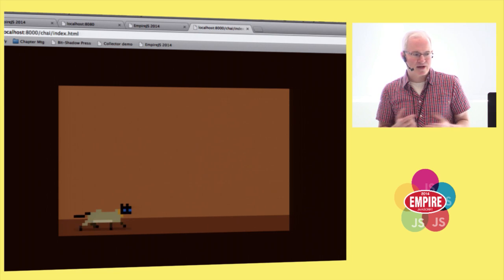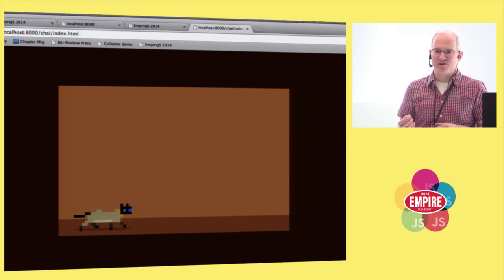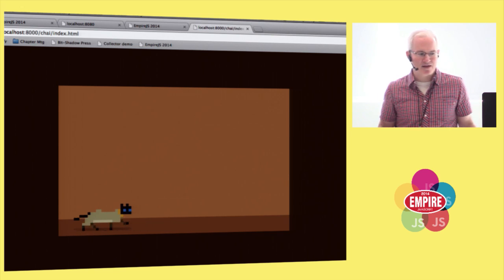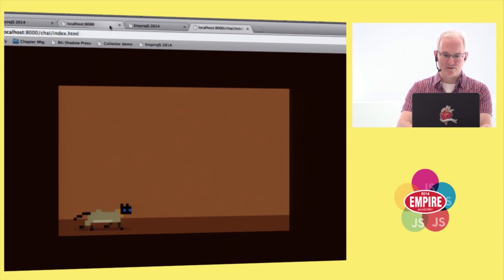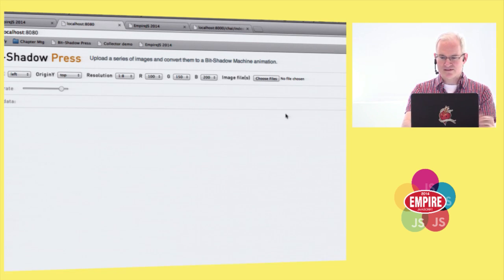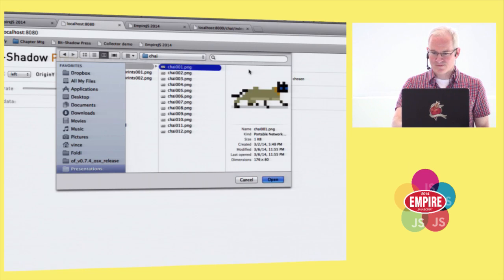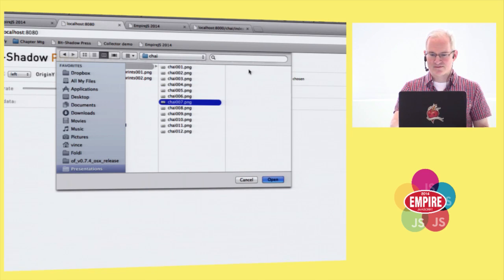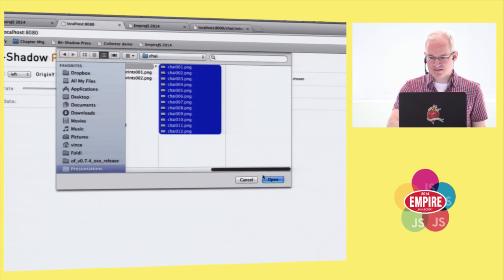What I'm doing here is I'm taking each frame and interrogating the four properties that I need for every pixel. Now, I created these frames in Photoshop, and it would be a real pain to have to go in to Photoshop and do this manually. So I created a tool to collect all the data for me. I call the tool the Bit Shadow Press.